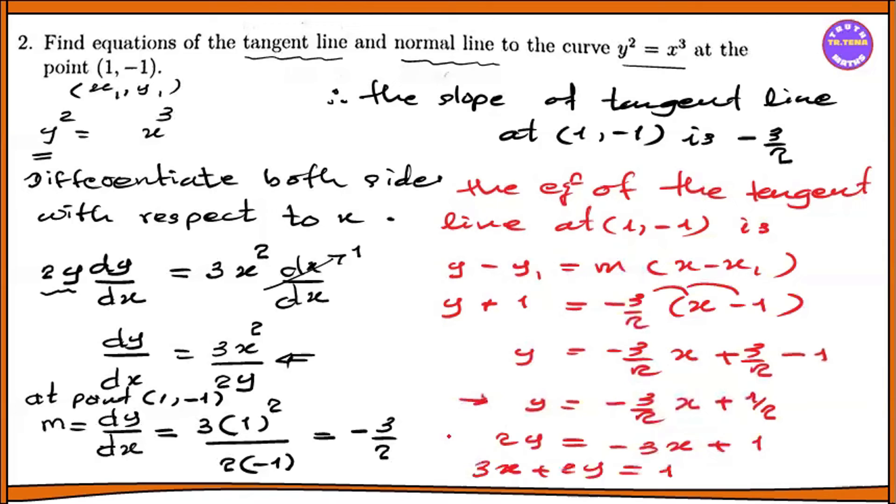Now for the normal line equation. The equation of the normal at (1, -1) is: y minus y1 equals minus 1/m times (x minus x1).